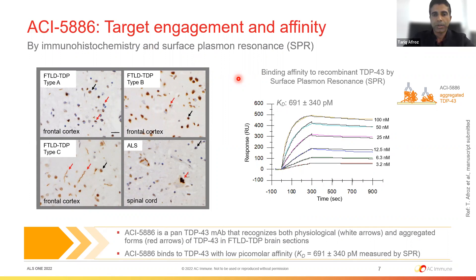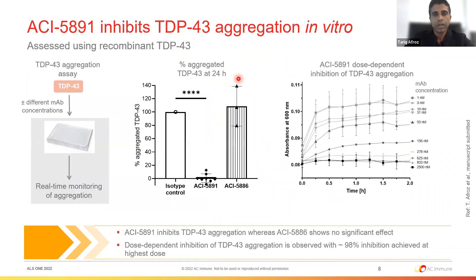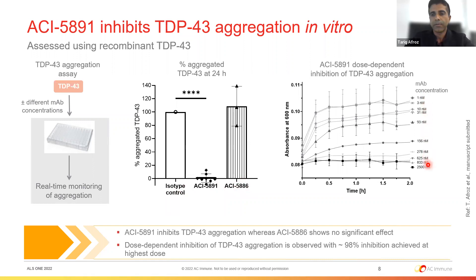We evaluated these two antibodies in various in vitro assays for efficacy in reducing TDP-43 aggregation. In a real-time recombinant TDP-43 aggregation assay, antibody ACI-5891 targeting the extreme C-terminus completely inhibited TDP-43 aggregation compared to an isotype control or ACI-58886 targeting the nucleic acid binding region. This inhibition was dose-dependent, showing complete inhibition at the highest concentration and allowing calculation of an EC50.